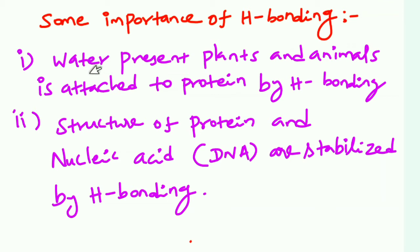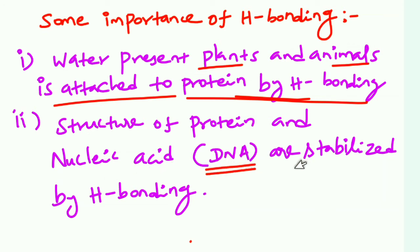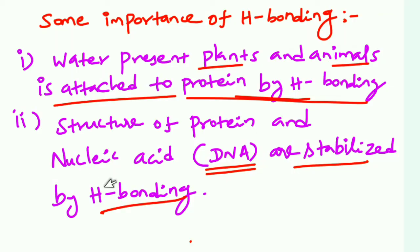Important points about hydrogen bonds: Water is present in plants and animals. Water is attached to protein by hydrogen bonds. The structure of proteins and nucleic acids — DNA — are stabilized by hydrogen bonds. Hydrogen bonds are very important.